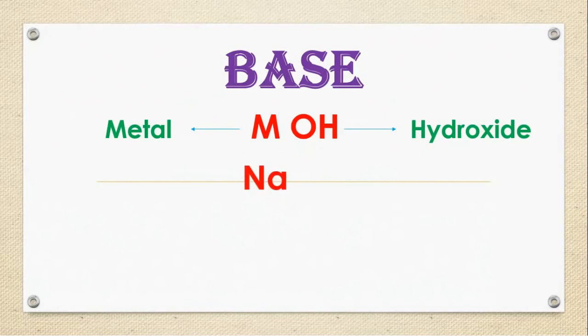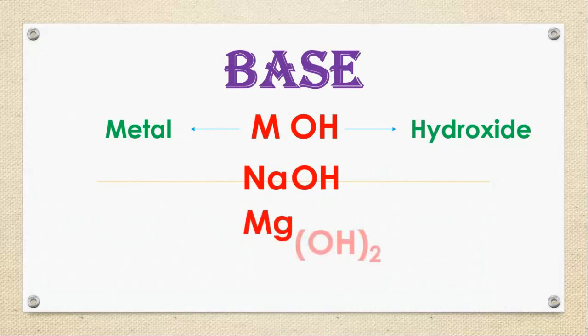Now you see some chemical formulas. Na is a metal, that is sodium. OH is hydroxide, gives sodium hydroxide. Mg OH taken twice gives magnesium hydroxide. Ca OH taken twice gives calcium hydroxide.